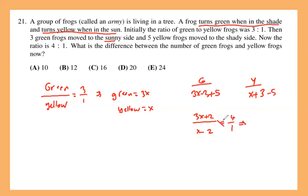And if you do cross multiplication, you will get 4x minus 8 equals 3x plus 2. Subtract 3x from both sides, you get 1x. Add 8 to both sides, so x will be 8 plus 2, which is 10.